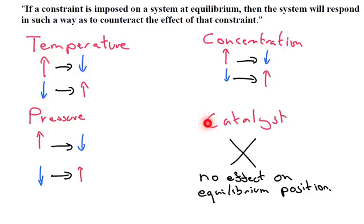I've mentioned catalyst here, but a catalyst does not affect the equilibrium position at all. This is probably the only time I'll talk about catalysts in this video, because there's no effect on the equilibrium position — they only get the chemical reaction to reach the equilibrium position faster. They cannot change the position of the equilibrium.